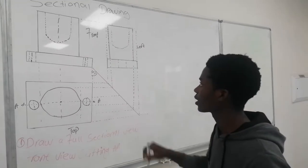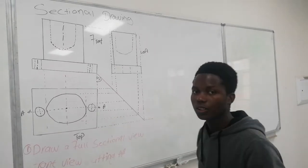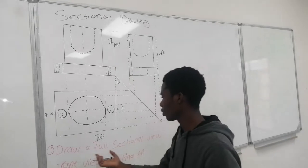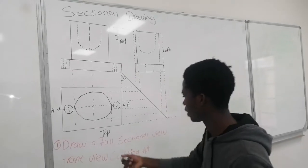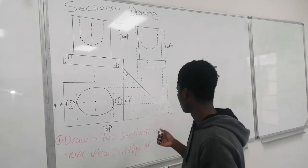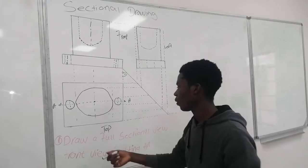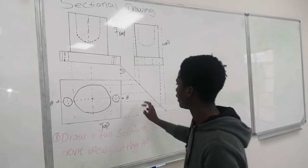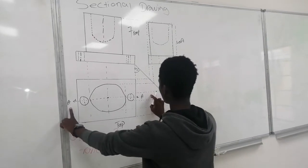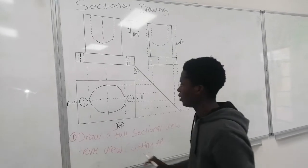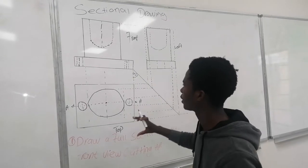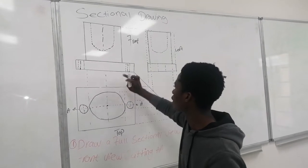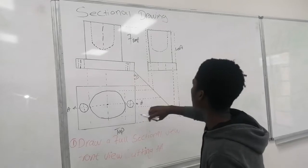Today I will be teaching a sectional drawing. They are going to ask you a question like this: draw a full sectional view of the front view cutting on AAE. When you are going to cut this one, you are going to be given two parts — the top and the front view.